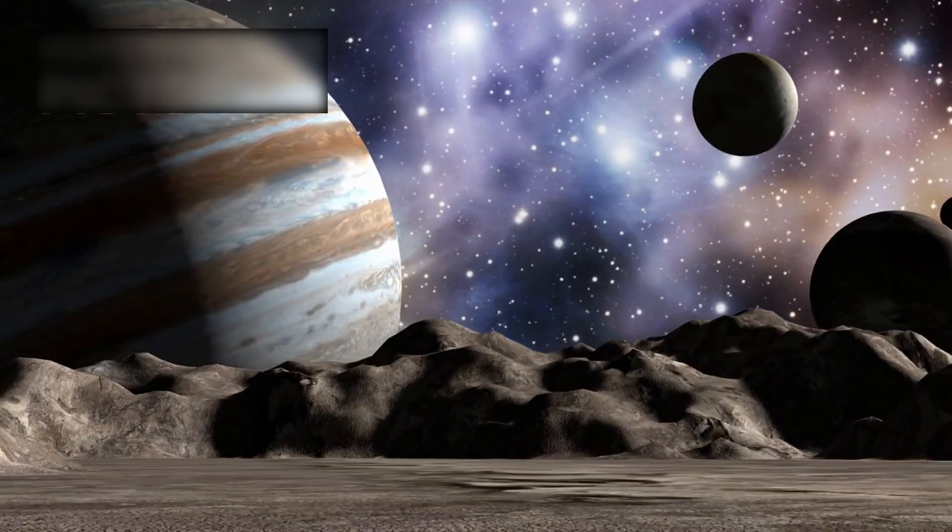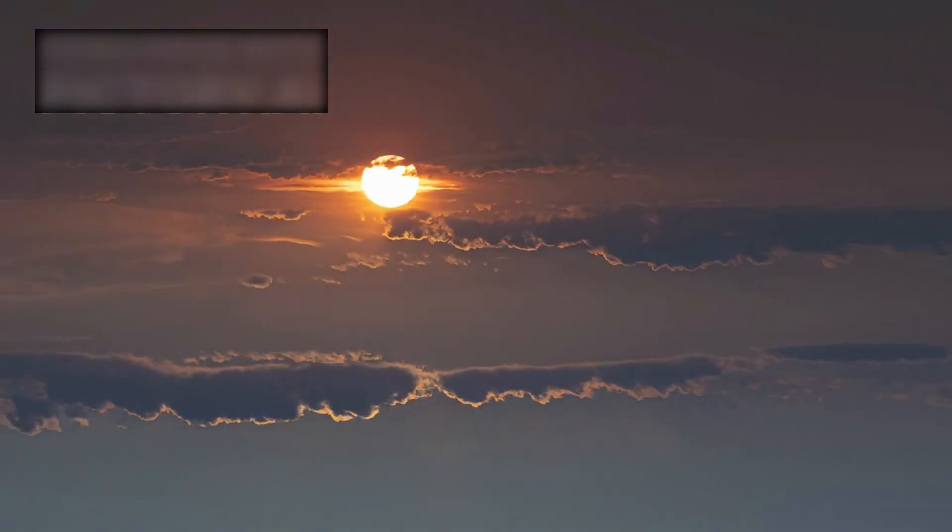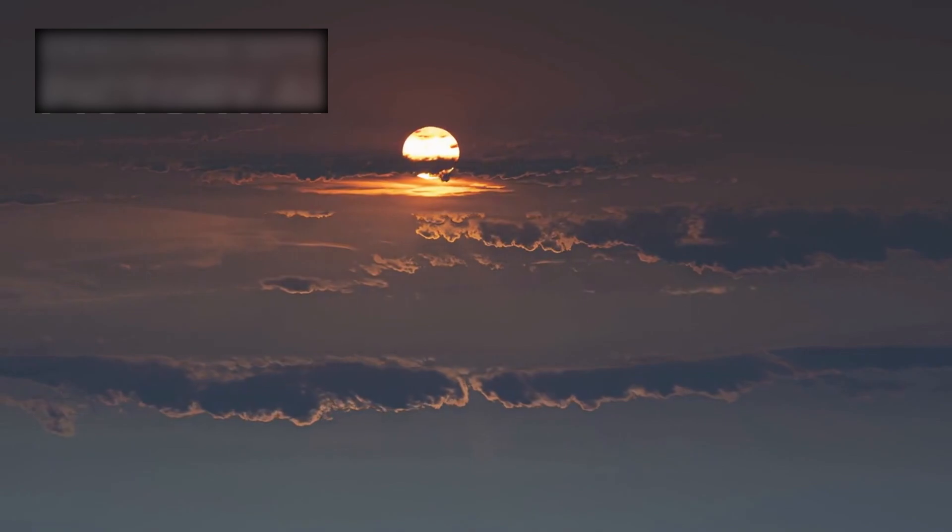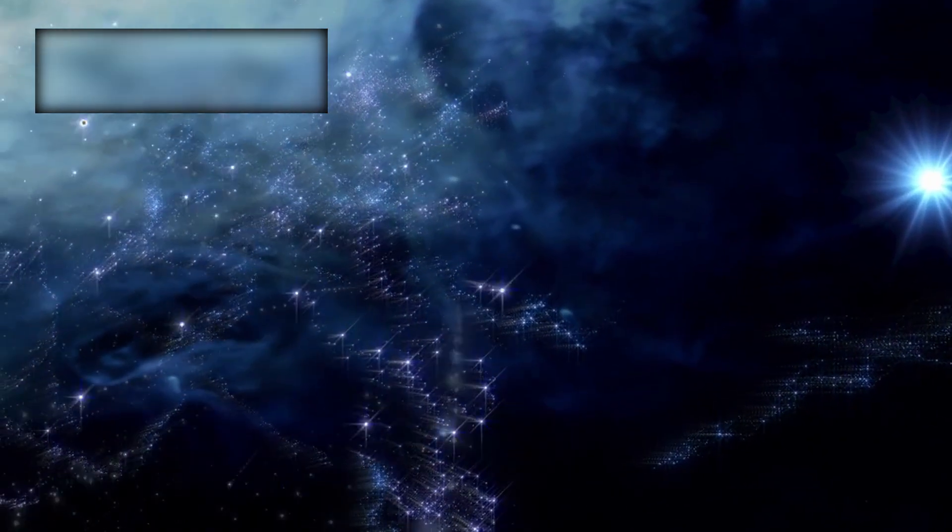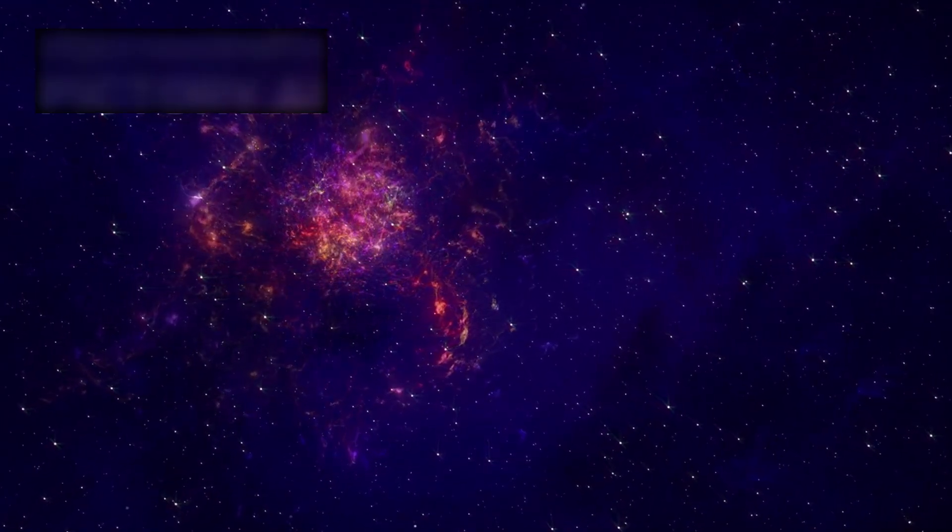Even more surprising, the heliosphere is not symmetrical. The galactic winds stretch it like a comet's tail, twisting its edges into strange, distorted shapes. Our protective shield, once assumed to be perfect, is fragile and far more complex. Beyond the heliopause, an unfamiliar realm.